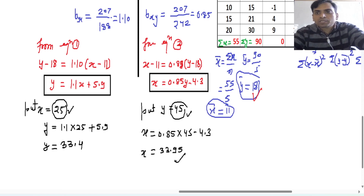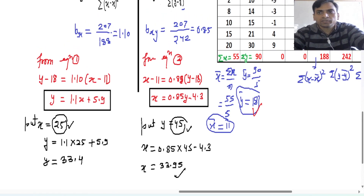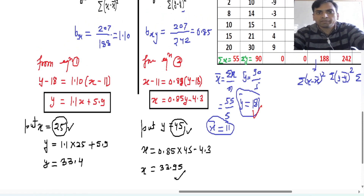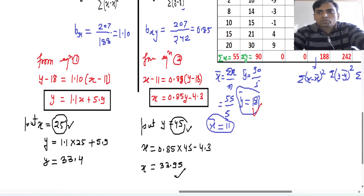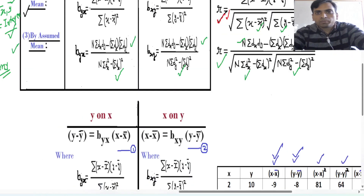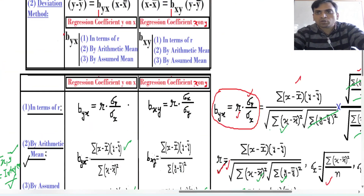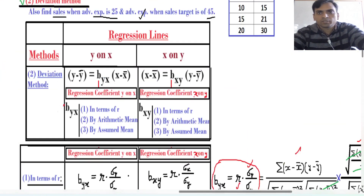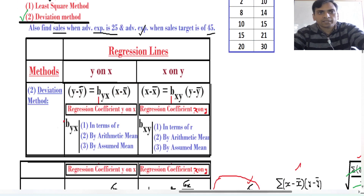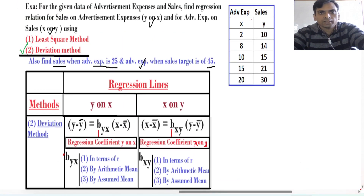So this is the overall deviation method to find b_yx and b_xy. I hope you understand this concept. Please like this video and subscribe to my channel Kanit Coach. Have a nice day. Thank you.